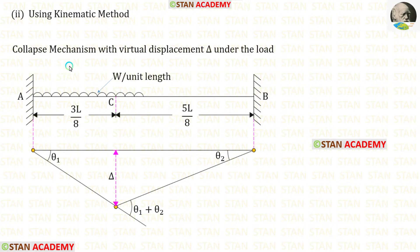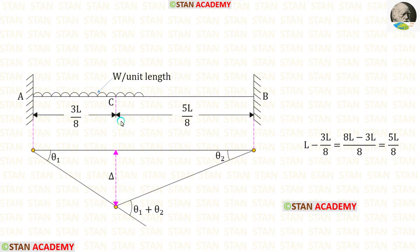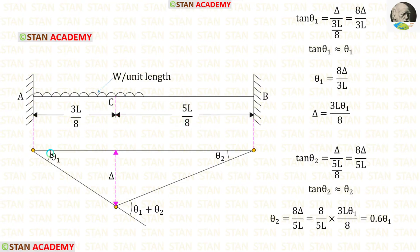Now let us use the kinematic method. From the static method, we know the plastic hinge occurs at a distance of 3L/8 from the left support. The virtual displacement delta occurs at that point. The remaining distance is L − 3L/8 = 5L/8. Let us call the angle on the left side theta1 and the angle on the right side theta2, so the total angle at the hinge is theta1 + theta2.